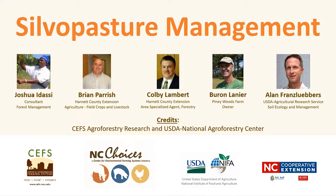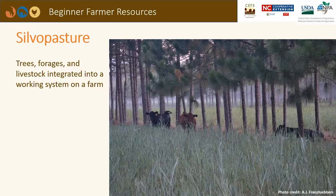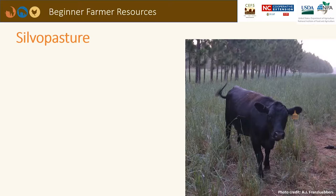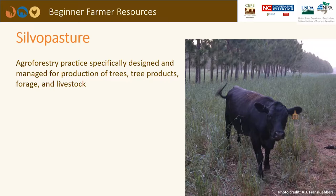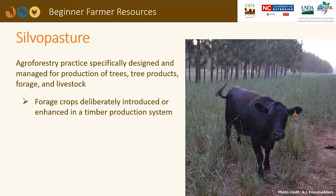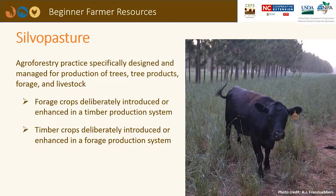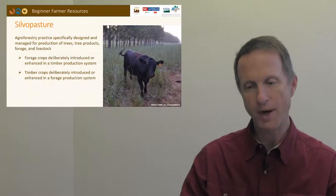Silvopasture is the combination of trees, forages, and livestock integrated into a working system on a farm. It is an agroforestry practice specifically designed and managed for production of trees, tree products, forage, and livestock. Silvopasture can be approached from an angle of forage crops deliberately introduced into a timber production system, or timber crops deliberately introduced into a forage production system.